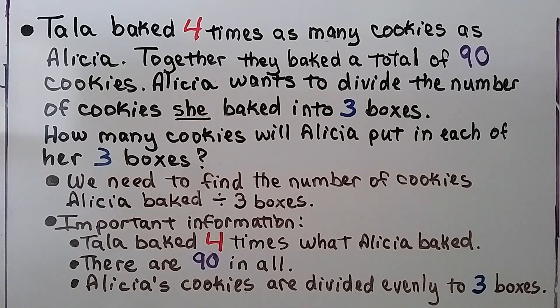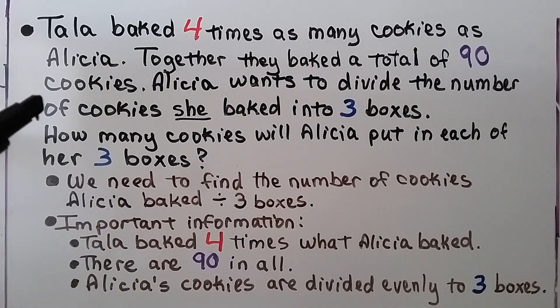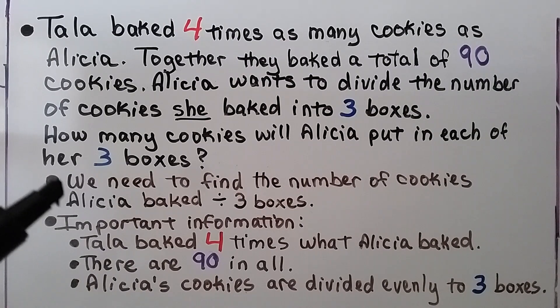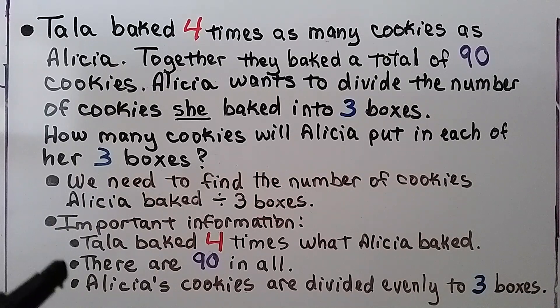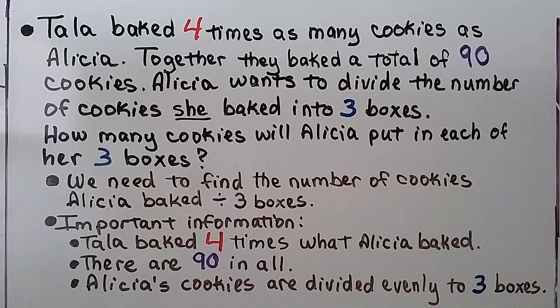Tala baked 4 times as many cookies as Alicia. Together they baked a total of 90 cookies. Alicia wants to divide the number of cookies she baked into 3 boxes. How many cookies will Alicia put in each of her 3 boxes? Our important information is that Tala baked 4 times what Alicia baked. There's 90 cookies altogether. And Alicia's cookies are divided evenly to 3 boxes.